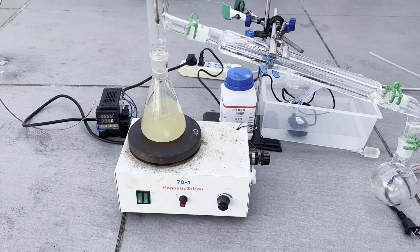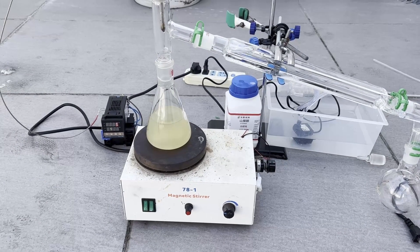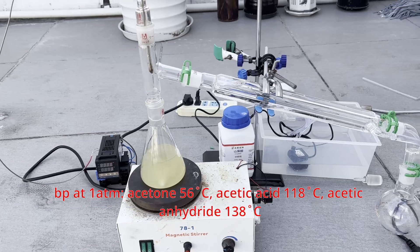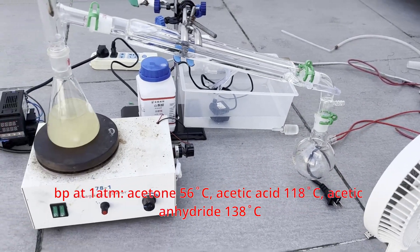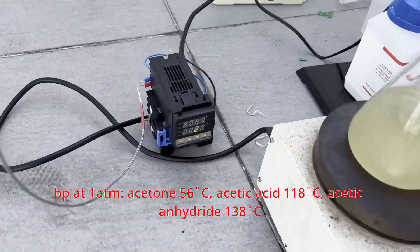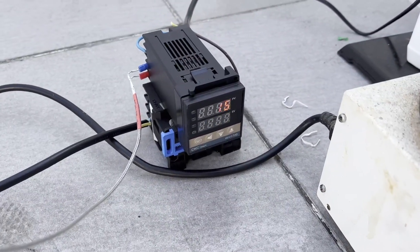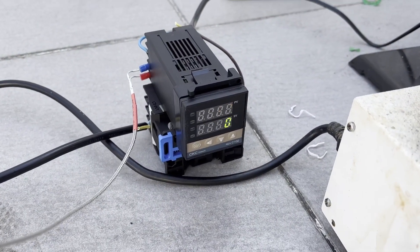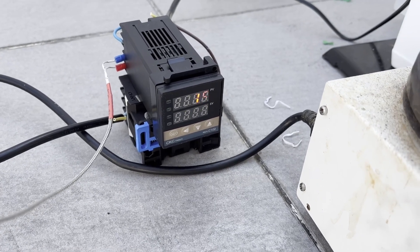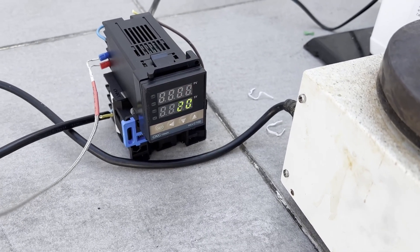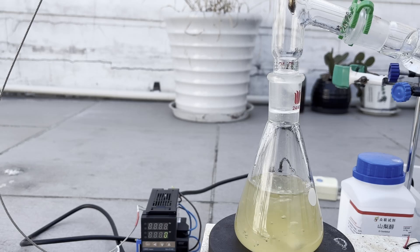Anyways, I disassembled the apparatus and proceeded to distill the liquid in the conical flask. Acetone boils at 56 degrees C, acetic acid at 118 C, and acetic anhydride at 138 C, so a simple distillation setup is probably more than enough to separate them. I also connected a new temperature control module that I bought, but it didn't seem to work well, and its temperature measurements are very inaccurate, so ignore the temperature displayed on it.